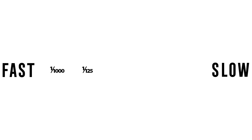Let's look at some examples. For example, you can see 1/1000 on your screen — that means 1/1000th of a second, a really fast shutter speed. Another example is 1/125, which is 1/125th of a second. Then there's 1/4, which is a quarter of a second — a lot slower than 1/125. Going even slower, we can look at actual seconds: 1 second, 5 seconds, even 10 seconds. Those are much slower shutter speeds than 1/4, 1/125, or 1/1000.